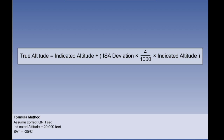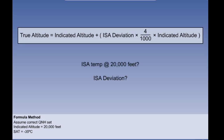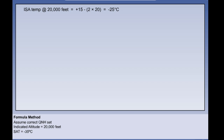Let's look at the formula method first. We'll assume that we have the correct QNH set. Our indicated altitude is 20,000 feet and the temperature at that altitude is minus 35 degrees Celsius. The first thing we have to do is work out what the ISA temperature should be at 20,000 feet and then find the ISA deviation. ISA temperature at 20,000 feet is plus 15 degrees at the surface minus 2 degrees per thousand feet — that's plus 15 minus 40, giving minus 25. However, our static air temperature is minus 35. This is 10 degrees colder than ISA.